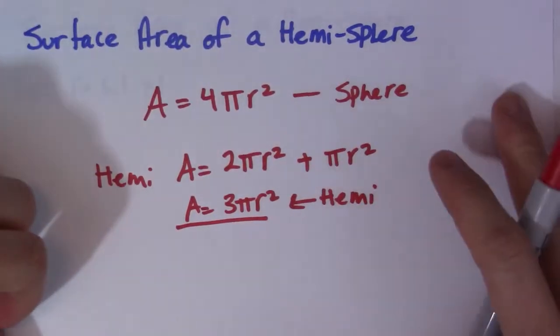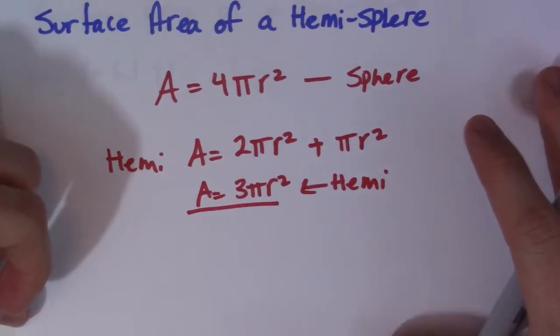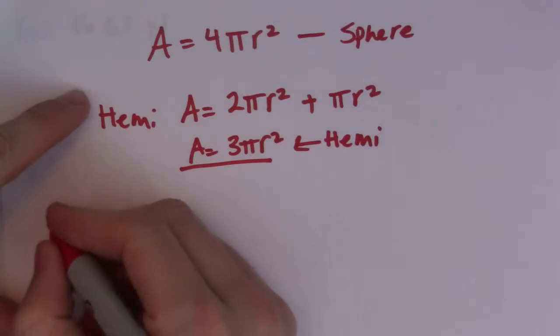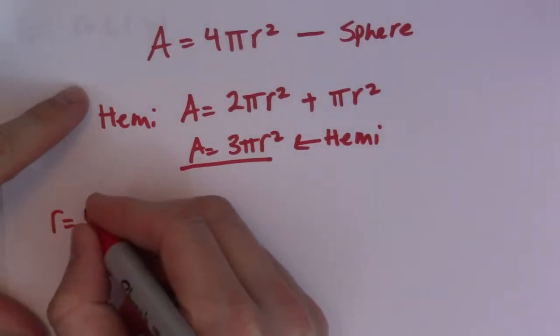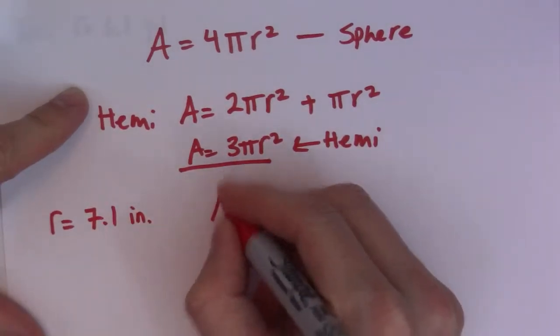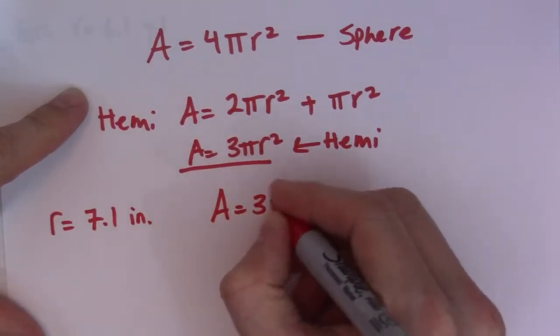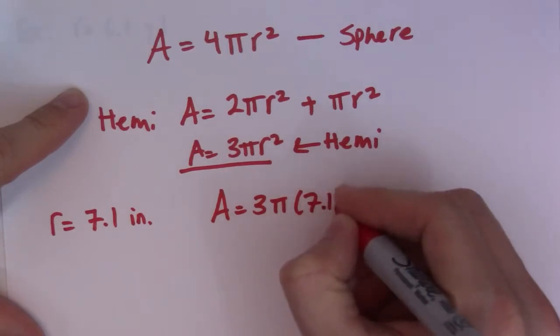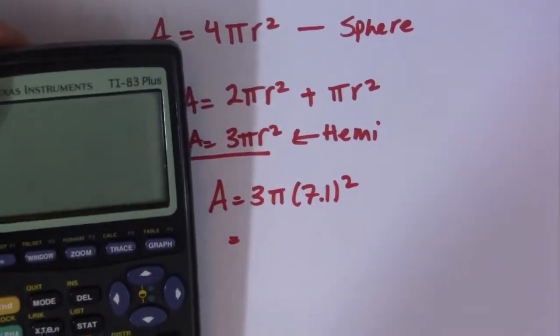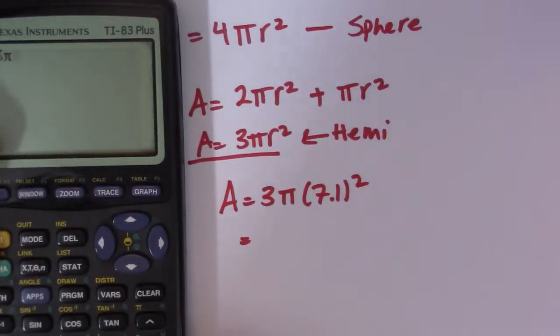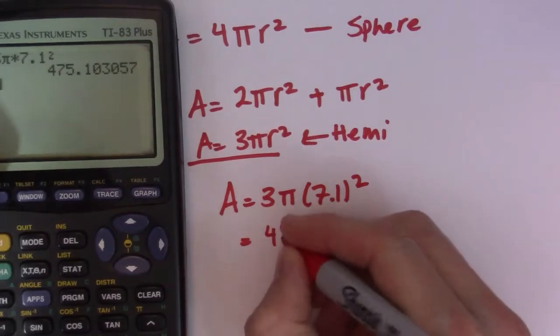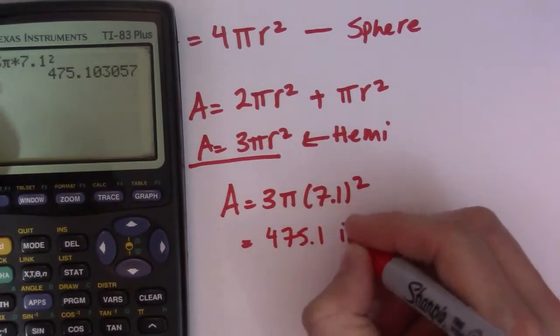Alright, so let's go ahead now and use this formula in action. Let's say we have a radius of 7.1 inches. So if I go A = 3π and my radius is 7.1 squared, then it's just a matter of going through the numbers. Really simple, really easy to use. So 3π times 7.1 squared and then I get 475.1 inches squared.